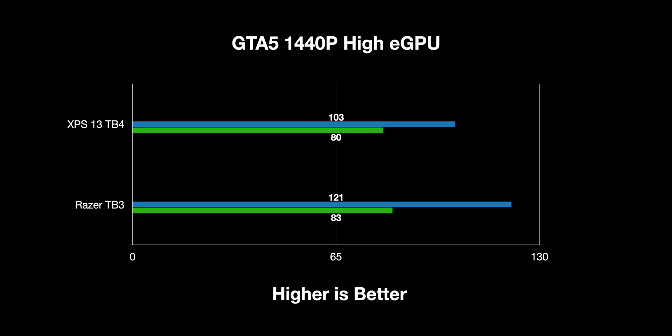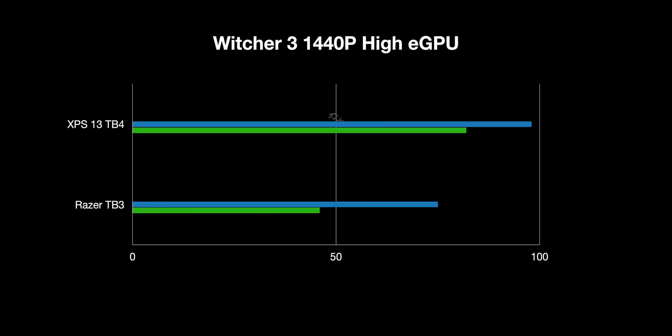In The Witcher, the XPS 13 2-in-1 with Thunderbolt 4 is faster again, and the 1% lows are better as well. I think Thunderbolt 4 being built into the CPU, the lower latency, and much faster RAM - 4200 MHz versus 3000 MHz - all adds up to faster performance and better 1% lows. I'm pretty shocked because I thought the beefier CPU in the Razer would make more of a difference, but clearly the bottleneck is that connection, the latency, and memory speed. I'll be doing more testing on this, so stay tuned.